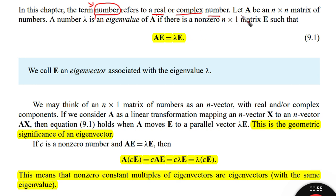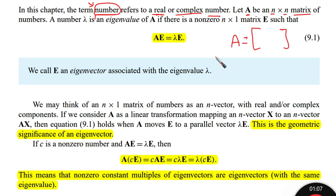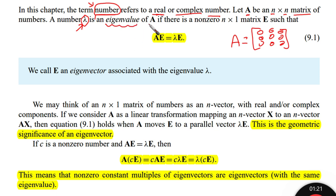Now let's start by letting A be an n-by-n matrix of numbers. So we have a matrix called A that contains numbers. A number lambda is called an eigenvalue of the matrix A if there is a non-zero n-by-1 matrix — meaning a vector e — such that a specific condition holds.